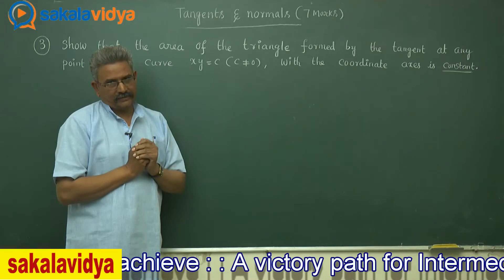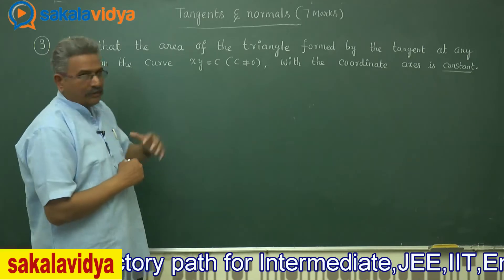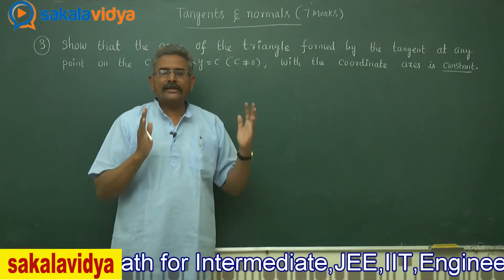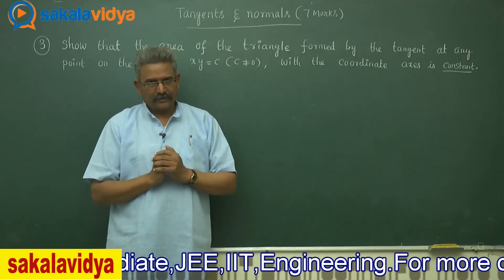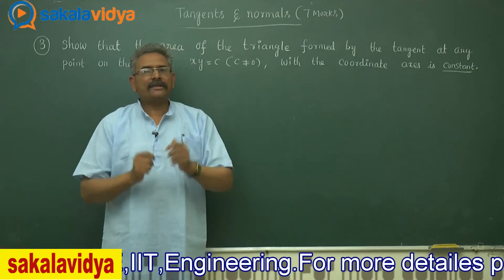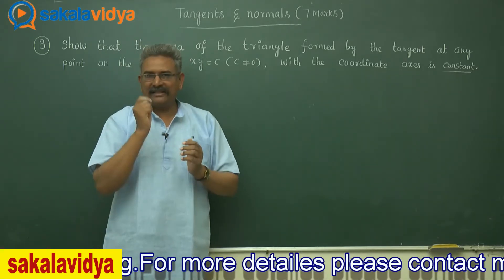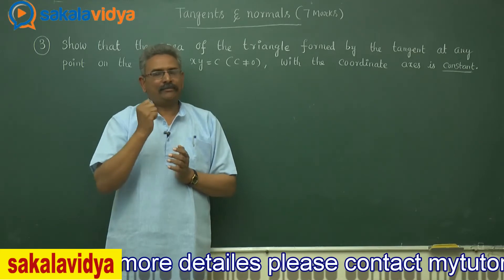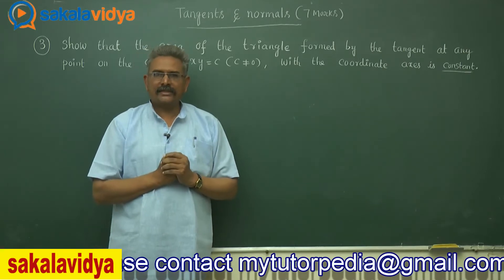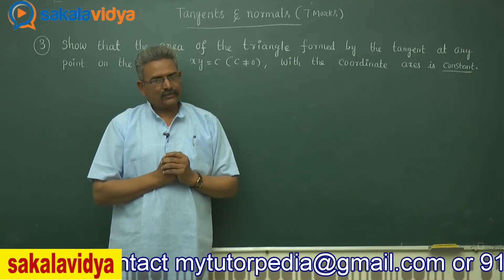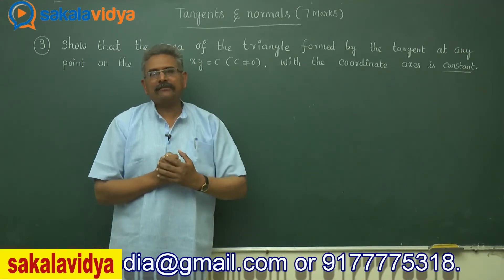That means the area formed by the tangent with the coordinate axis is constant — we need to prove this. In order to solve this problem, first let the point P(x1, y1) be any point on the curve. Since that point lies on the curve, it must satisfy the curve, so we get x1 times y1 is equal to C. That is a very important factor to be remembered.